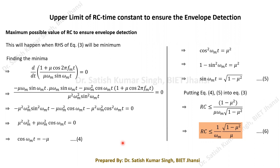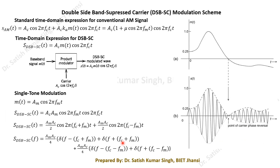67.67% of power is wasted in sending the carrier itself. That is why we look at the Double Sideband Suppressed Carrier scheme — in this scheme we suppress the carrier part, which saves the power requirement. In conventional AM, most of the power is wasted sending the carrier, so today we look at how DSBSC can be used to transmit the message signal efficiently.